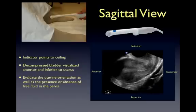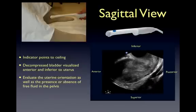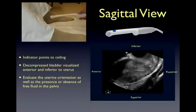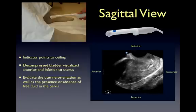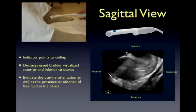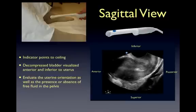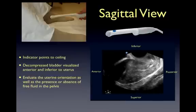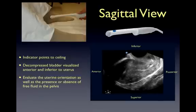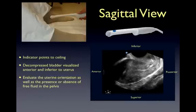Some patients prefer to insert the probe themselves at the start of your exam. When inserting the probe, the indicator should face up towards the ceiling. This will give you a sagittal view of the pelvis. Rock the probe anteriorly and posteriorly and fan it side to side to evaluate the shape of the uterus as well as the presence or absence of free fluid in the pelvis, usually seen in the pouch of Douglas.